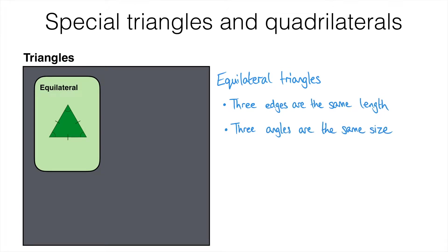Since the angles in a triangle must add up to 180 degrees, each angle is 60 degrees, because three lots of 60 is 180 degrees.